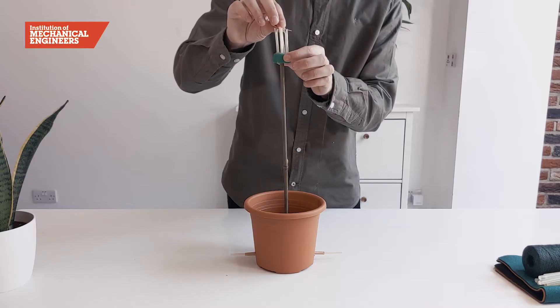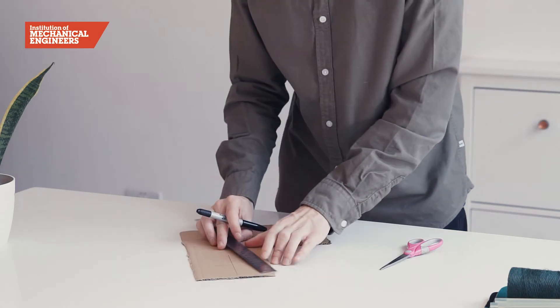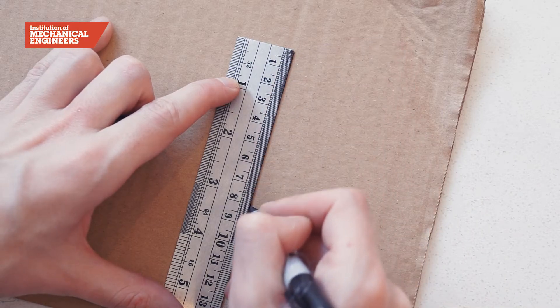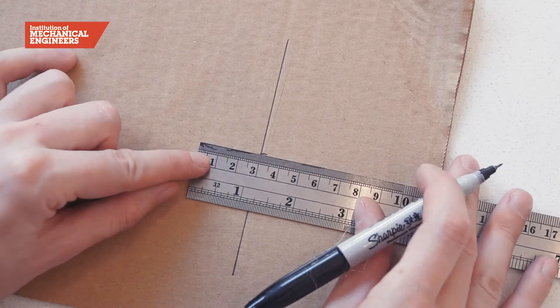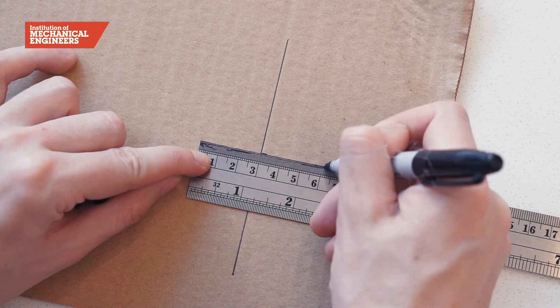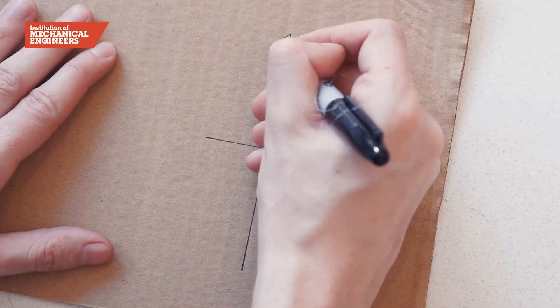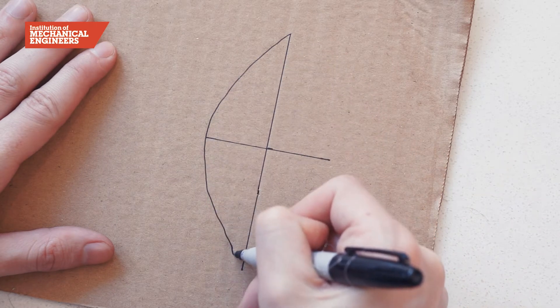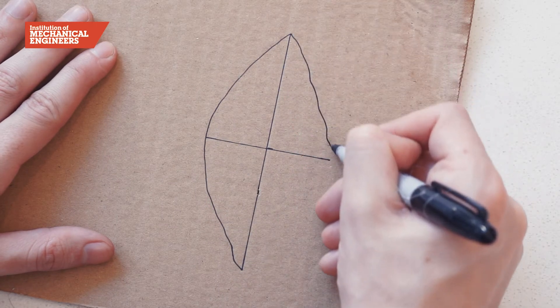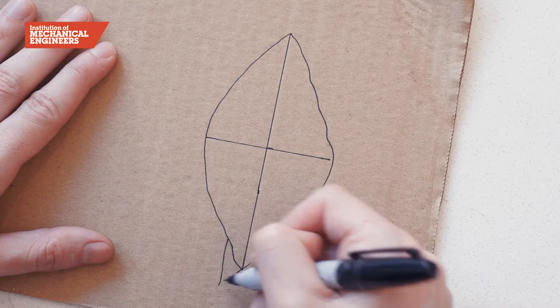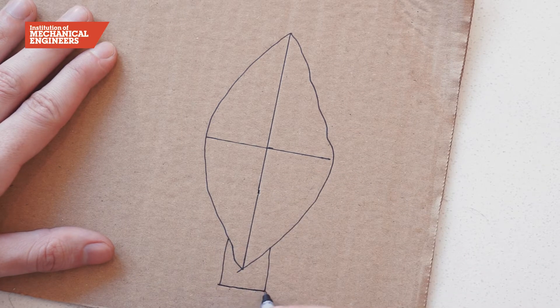Now we will make the petals. To draw the shape, mark a 12cm long line. Then, measure 6cm along it and draw a perpendicular 6cm long line. Join the straight lines with the curved lines to create our petal shape. Finally, add a tab at the end which will connect the petal to the top of our stem.